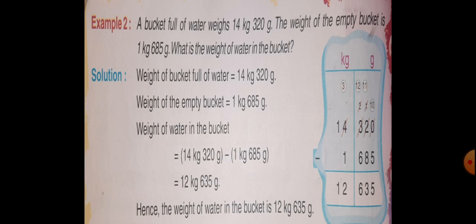To find the weight of water in the bucket, you will subtract weight of empty bucket from weight of bucket full of water. So write statement, weight of bucket full of water is equal to 14 kg 320 g. Weight of empty bucket is equal to 1 kg 685 g.